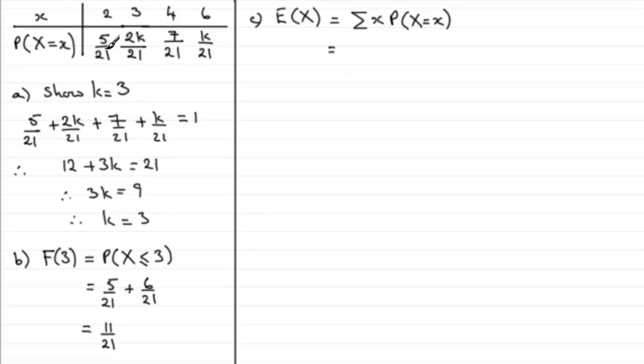So for this example it's going to be 2 multiplied by 5 over 21, let's just put down the working, plus the next observed value, 3 multiplied by the associated probability. But k is 3 here so it's going to be 6 over 21. And then plus the next observed value, 4 multiplied by 7 over 21. And then finally 6 multiplied by k over 21, but k was 3 so that's 3 over 21. And leave you to work that out, but what you should find you get is 74 over 21.